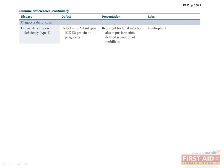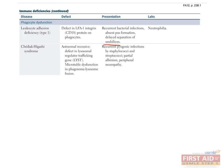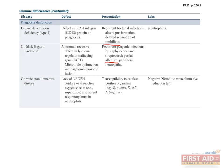Phagocyte dysfunction gives rise to several immune deficiency states. Leukocyte adhesion deficiency arises from a defect in the LFA-1 integrin protein on phagocytes, resulting in recurrent bacterial infections, absent pus formation, and delayed separation of the umbilicus; histologically characterized by neutrophilia. The autosomal recessive Chediak-Higashi syndrome results in a defect in microtubule function, causing recurrent pyogenic infections from staph and strep, as well as partial albinism and peripheral neuropathy. Chronic granulomatous disease results from neutrophils lacking NADPH oxidase, rendering them unable to generate reactive oxygen species for the respiratory burst, increasing susceptibility to catalase-positive organisms. This is confirmed by a negative nitroblue tetrazolium dye test.